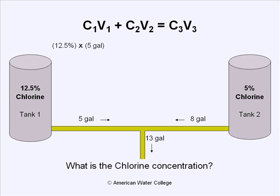To do this, we're going to plug in our numbers. So C1 times V1 would be 12.5 times five gallons. To that, we add the 5% and eight gallons. And that's going to equal concentration three times 13 gallons.